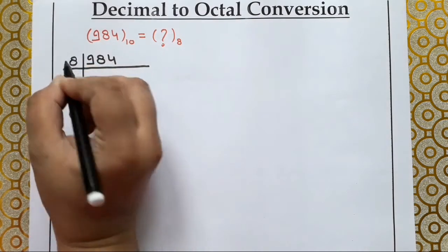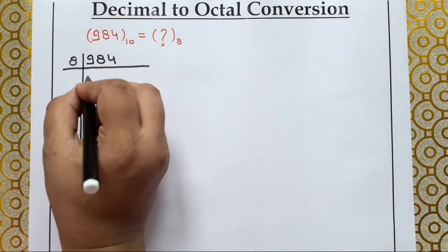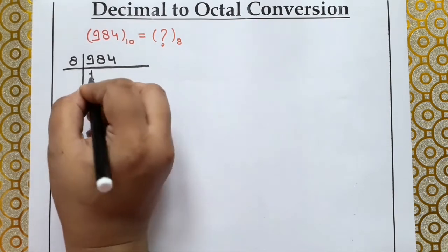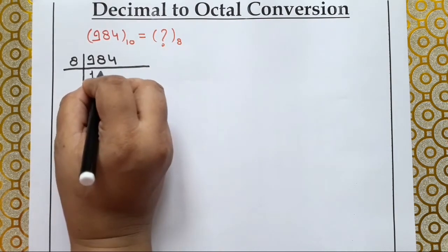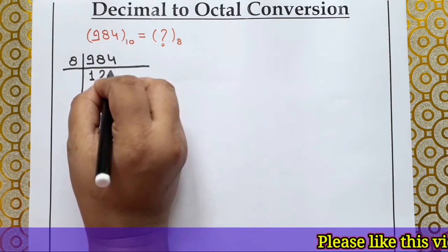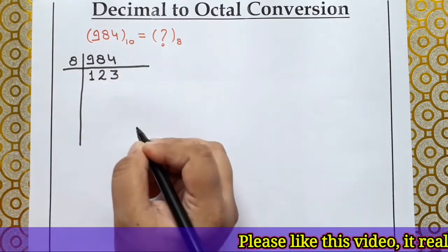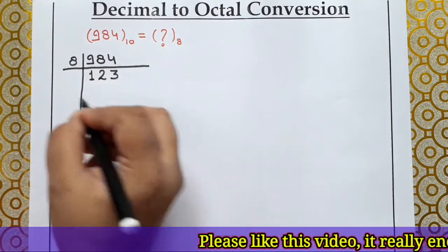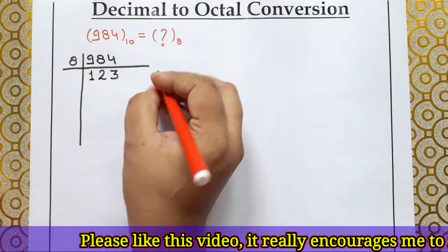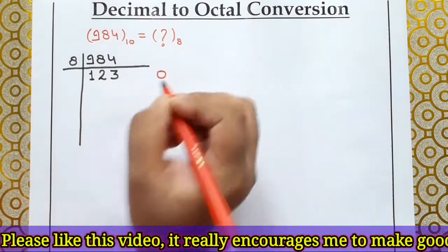Starting division by 8: 984 divided by 8 — 8×1=8, 8×2=16, 8×3=24 — the number is fully divided and the remainder left here is 0.